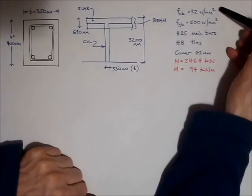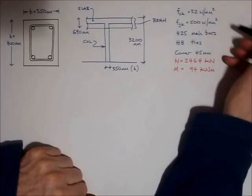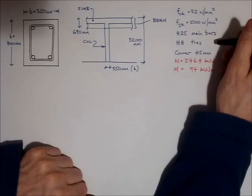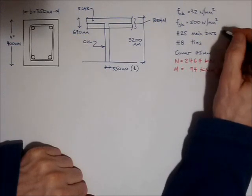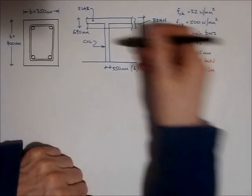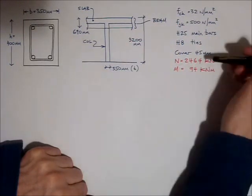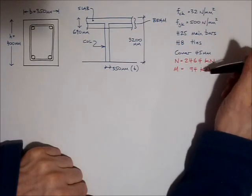It's got some deep beams on either side. And here's the standard data: it's got 32 Newton concrete, 500 Newton bars, I'm assuming there are 25 mil main bars in the column, that's the longitudinal bars running up vertically through the column, and H8 ties.